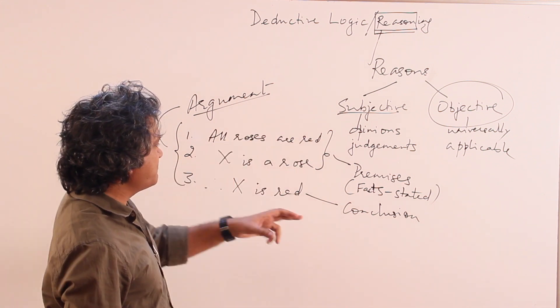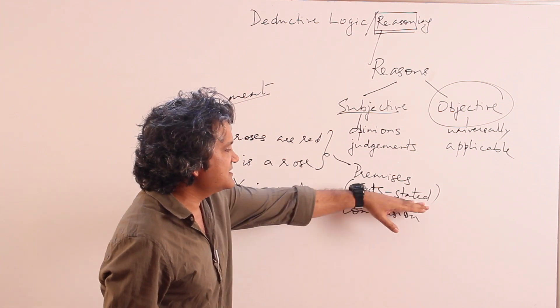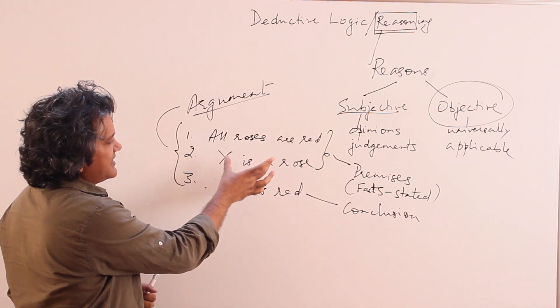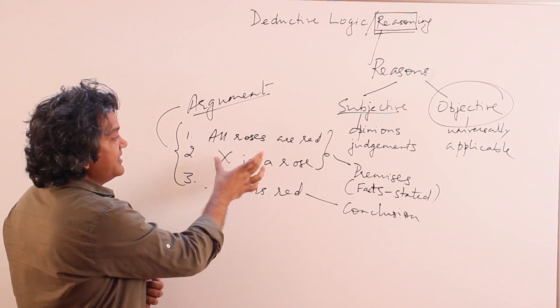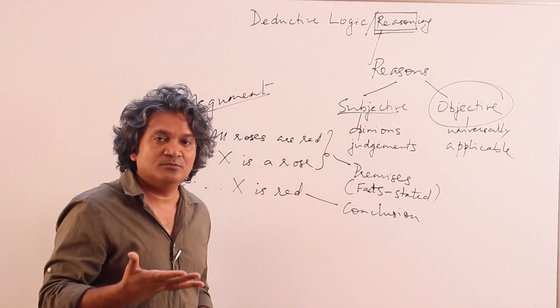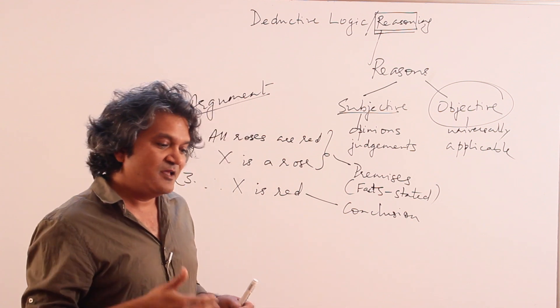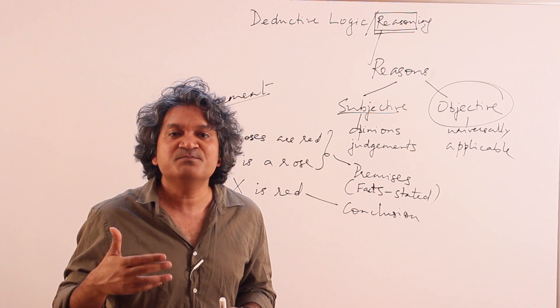Now if you pay attention, I said stated facts which are stated. What stated implies is that it is given to us as a fact. It is given to us as a premise. It doesn't have to be true. That is the difference between facts and truths in logic. The difference is that facts may or may not be true.